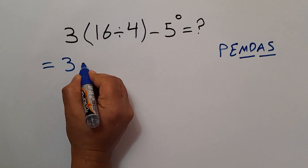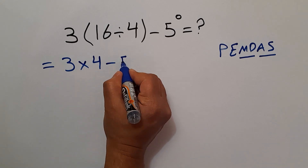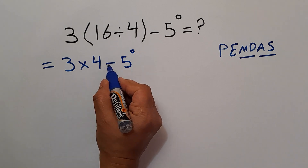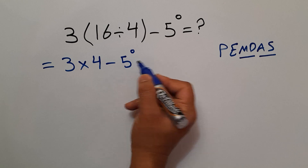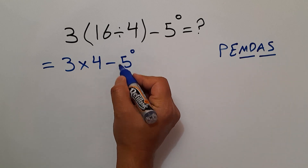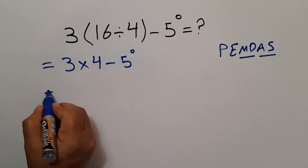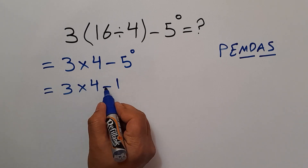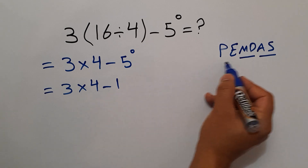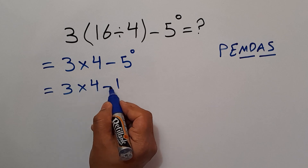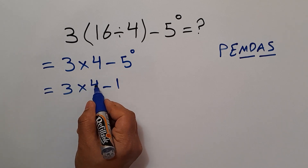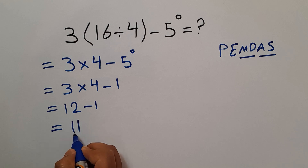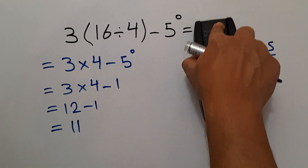So we have 3 times 4 minus 5 to the power of 0. We have one multiplication, one subtraction, and one exponent. According to PEMDAS, first we handle the exponent: 5 to the power of 0 equals 1. So we have 3 times 4 minus 1. Now multiplication comes before subtraction, so first 3 times 4 equals 12, and 12 minus 1 gives us 11. Our final answer is 11.